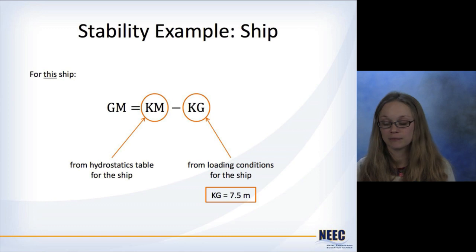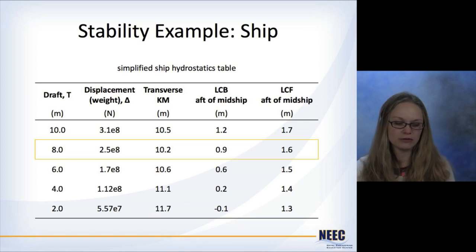Okay, I have KG. So then you go to the hydrostatics table for the ship. You go find the draft, here's a simplified version of one. Draft is 8 meters, read across and find where the transverse KM is. In this case, it's 10.2 meters.